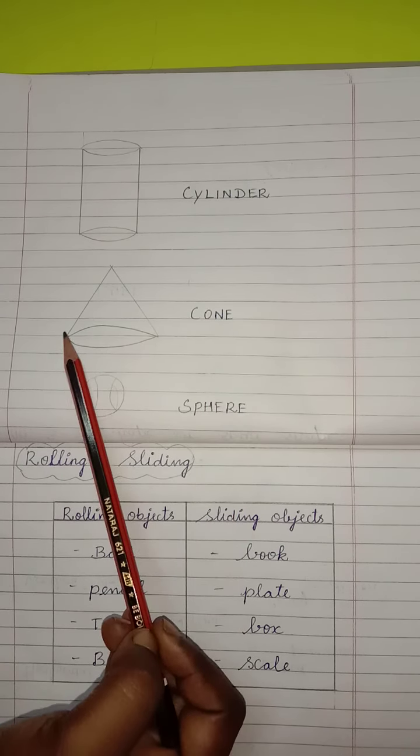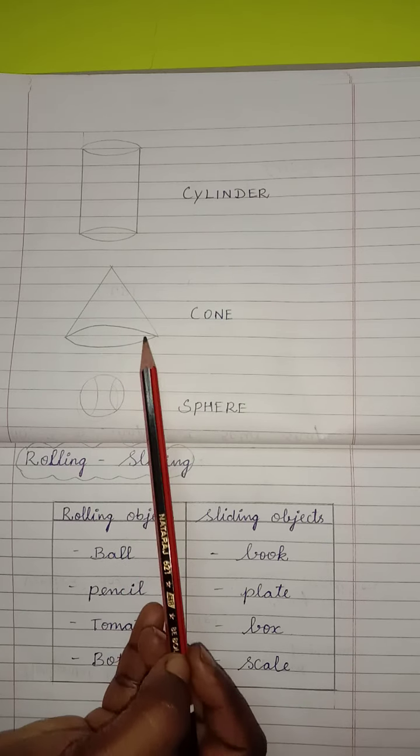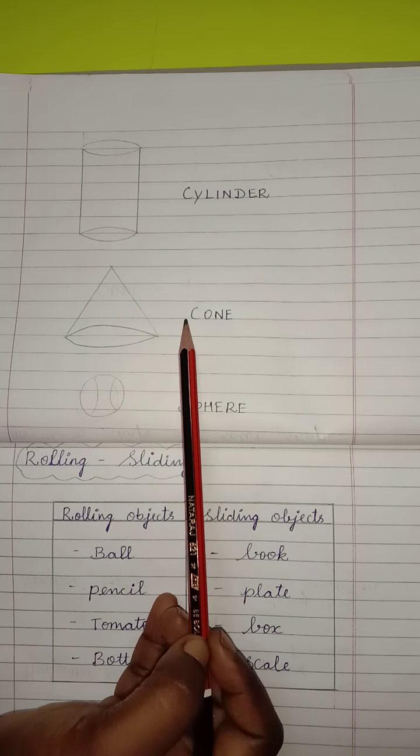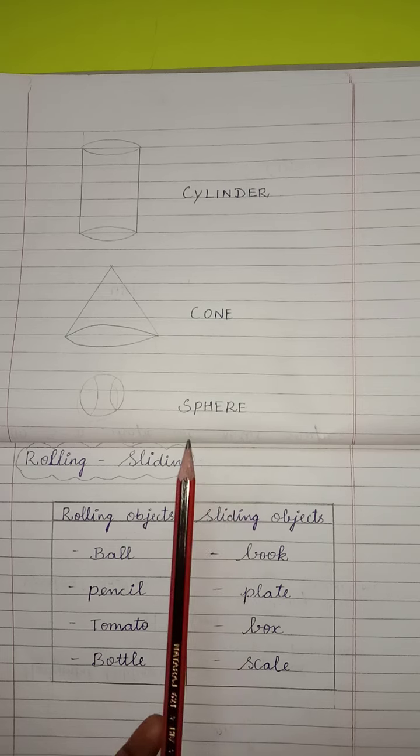Cone. Using a triangle, we can draw cone. C-O-N-E. Cone. Then, sphere.